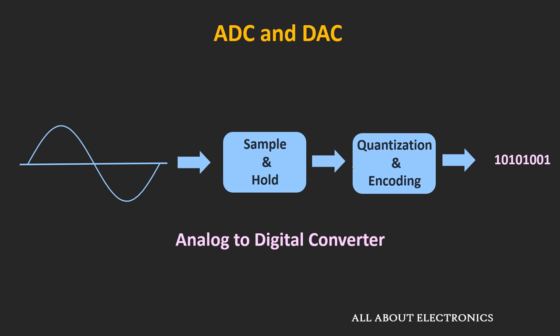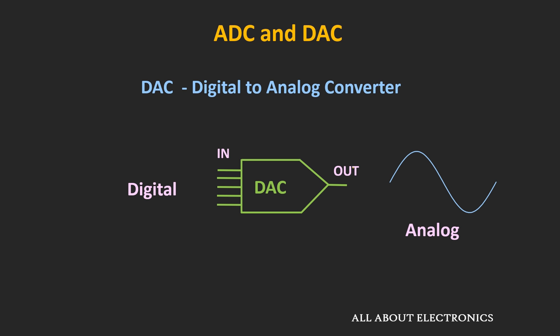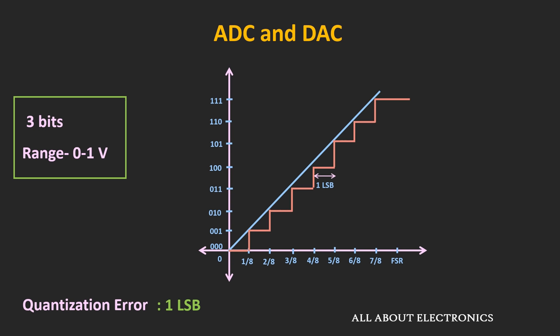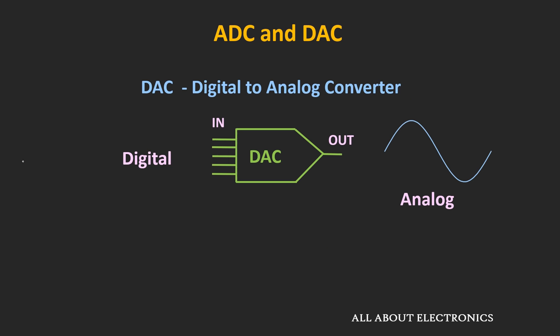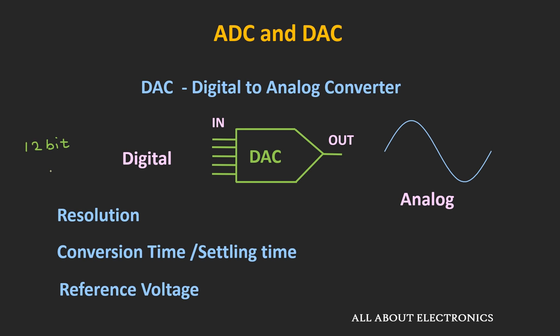These are the basic steps for analog-to-digital conversion. Now let's briefly discuss the DAC. In the case of the DAC, according to the digital bitstream, the analog signal is generated. How accurately the signal is reconstructed depends on the resolution of the DAC. For example, a 12-bit DAC can reconstruct the signal more accurately than a 3-bit DAC. The important parameters for the DAC are resolution, reference voltage, and settling time. The settling time decides the maximum frequency which can be reconstructed by the DAC.